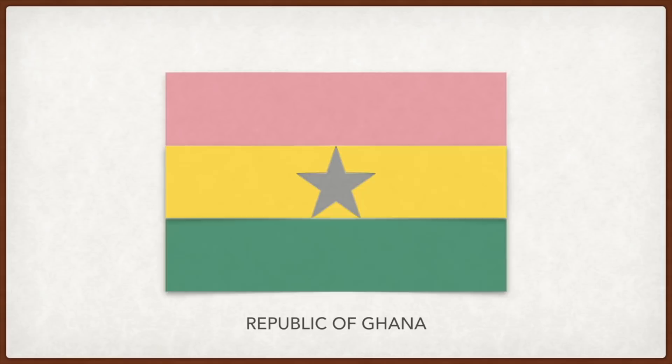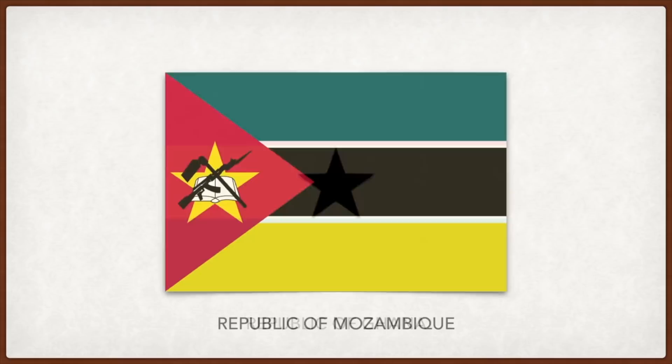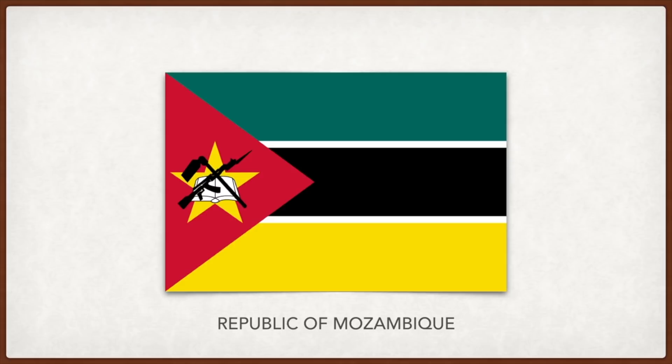Mozambique: the green stands for the land, white signifies peace, black represents the African continent, yellow symbolizes the country's mineral wealth, and the red represents independence. The rifle stands for defense and vigilance, the open book symbolizes the importance of education, the hoe represents the country's agriculture, and the star symbolizes Marxism.